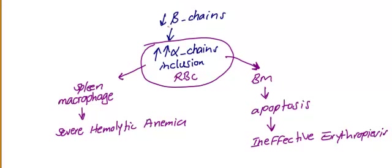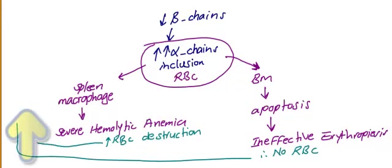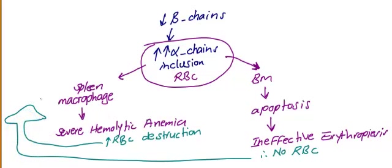As a result, you will not have red blood cells produced effectively, and you will have increased red blood cell destruction. If you have both of these conditions — no red blood cells and increased destruction — then you need a lot more erythropoiesis, meaning more red blood cells synthesized.